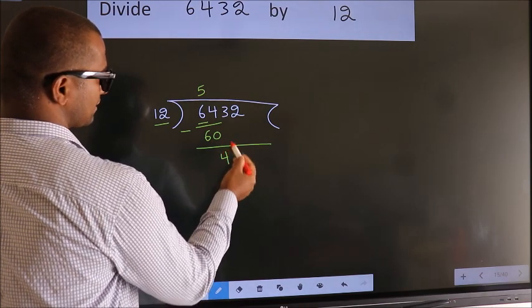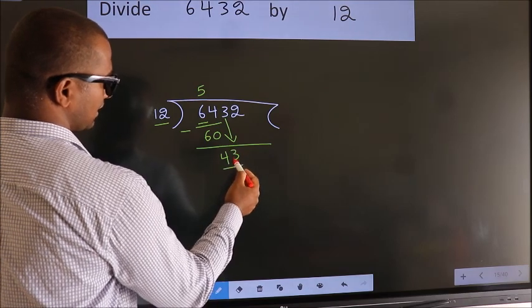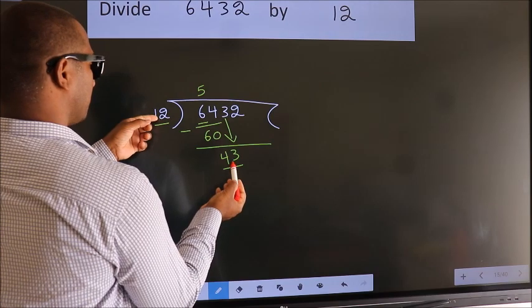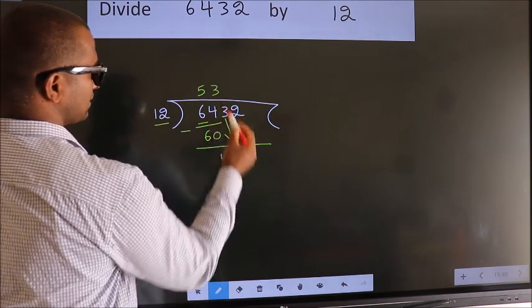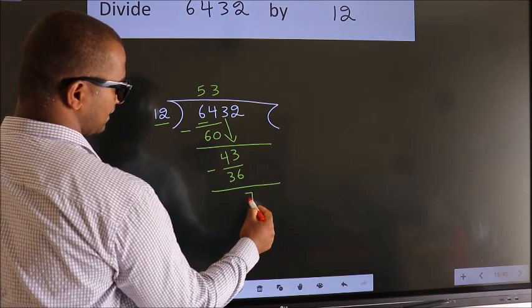After this, bring down the beside number. So, 3 down. 43. A number close to 43 in the 12 table is 12 threes, 36. Now we subtract. We get 7.